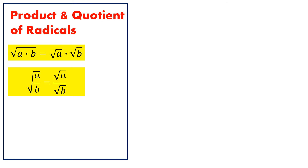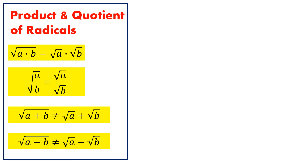Now, remember, these properties work for any numbers that are multiplied or divided, but not for numbers that are added or subtracted. For example, if we have the square root of A plus B, we can't say that the radical is equivalent to square root of A plus square root of B. We can't take two terms under the radical and separate them into two different terms. The same thing applies with subtraction — we can't say square root of A minus B is equal to square root of A minus square root of B.